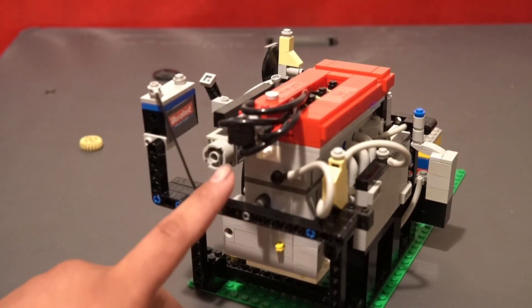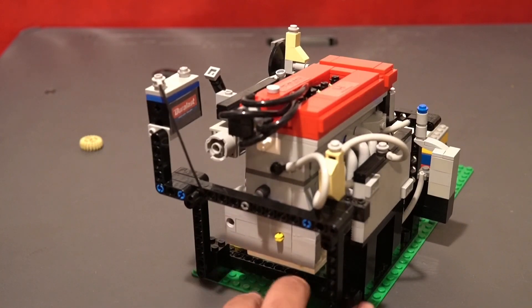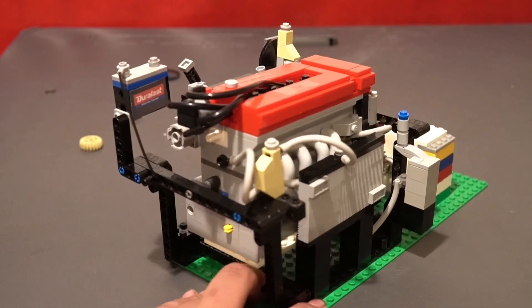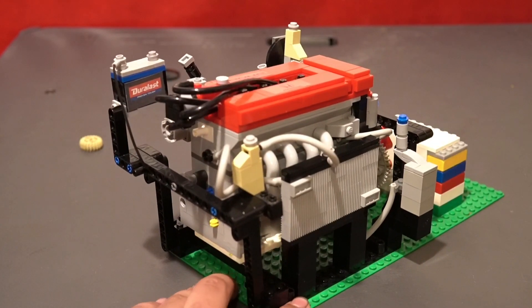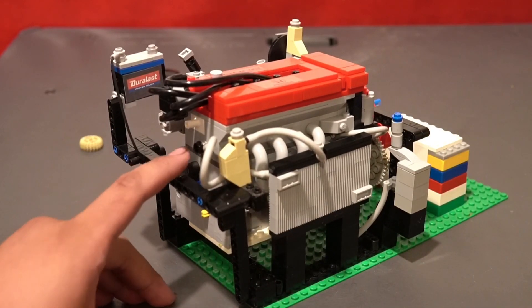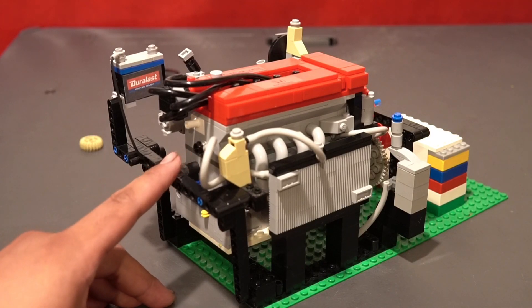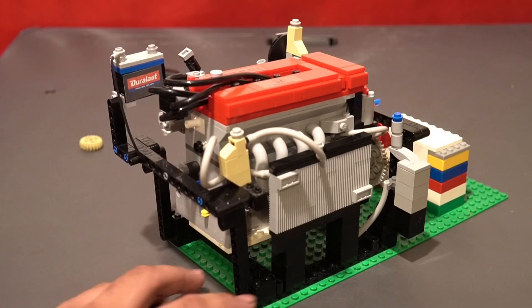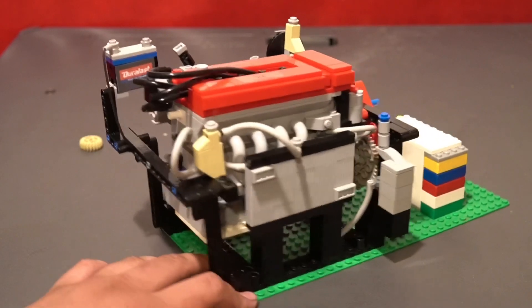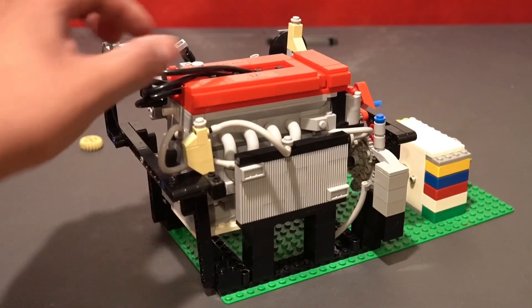This side we have the distributor. The distributor distributes the spark to all four cylinders via the ignition wires and this is the radiator that takes the coolant and basically brings it back inside the block. The motor mounts are made out of rubber so the engine has a bit of give.